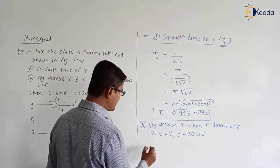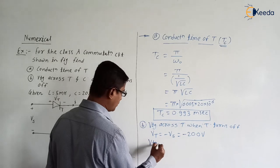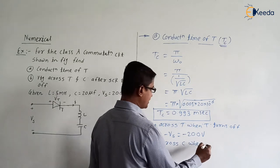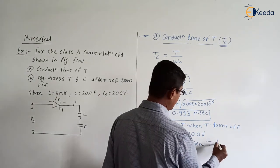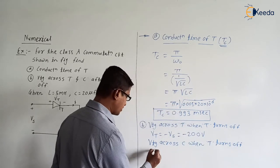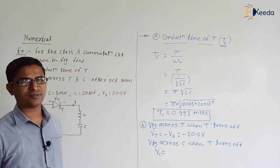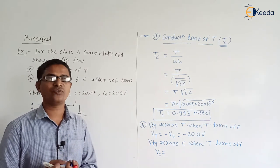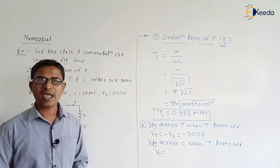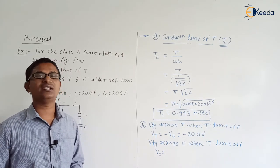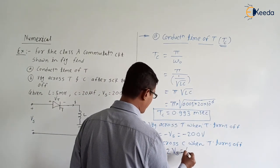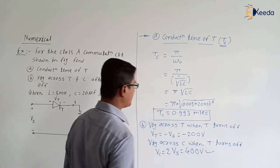Similarly, voltage across the capacitor when the thyristor turns off: the thyristor turns off at t = π/ω₀, and at that time Vc = 2Vs. So Vc = 2 × 200 = 400 volt.